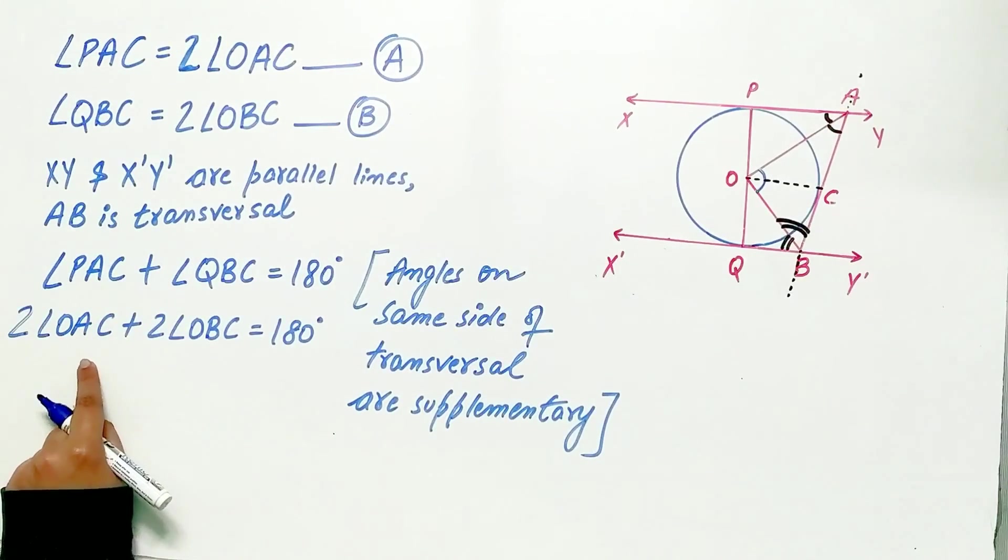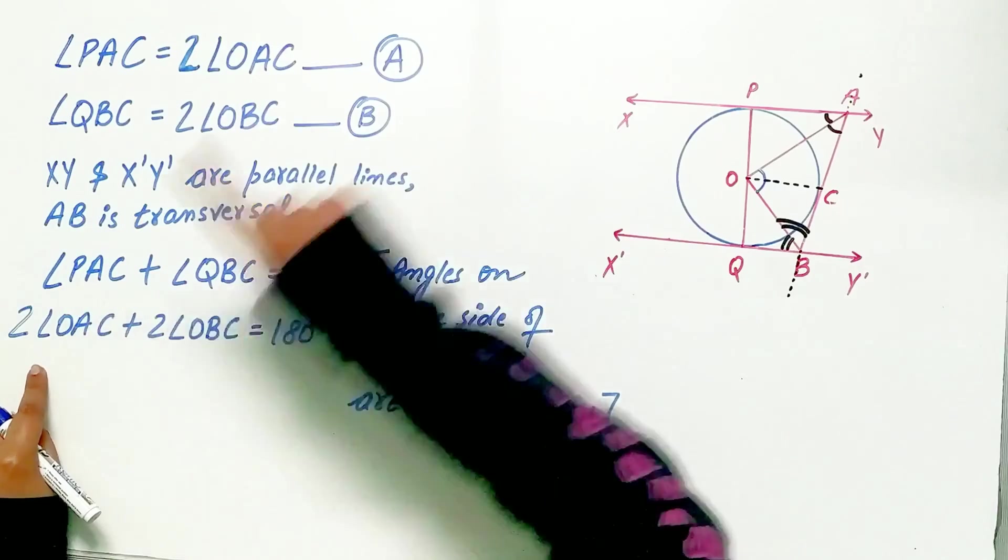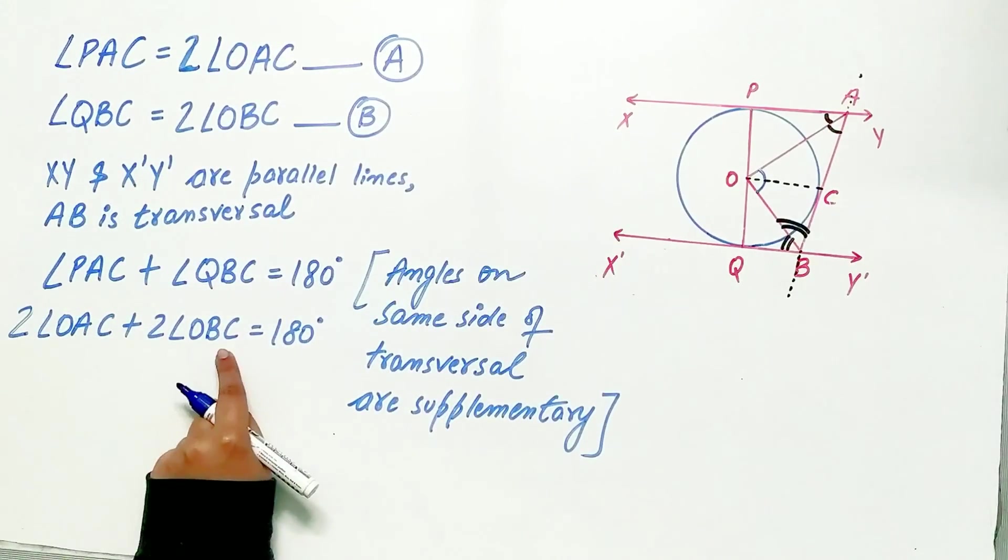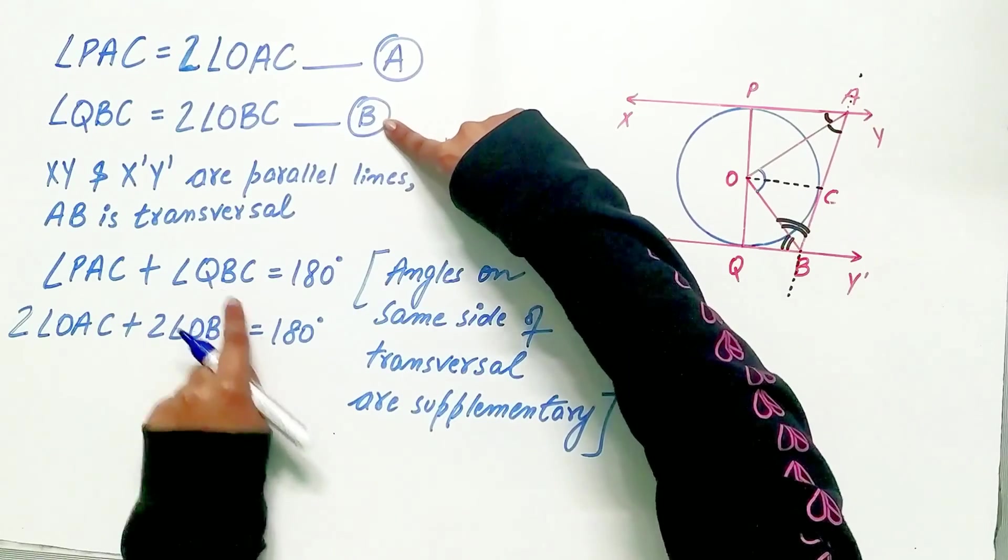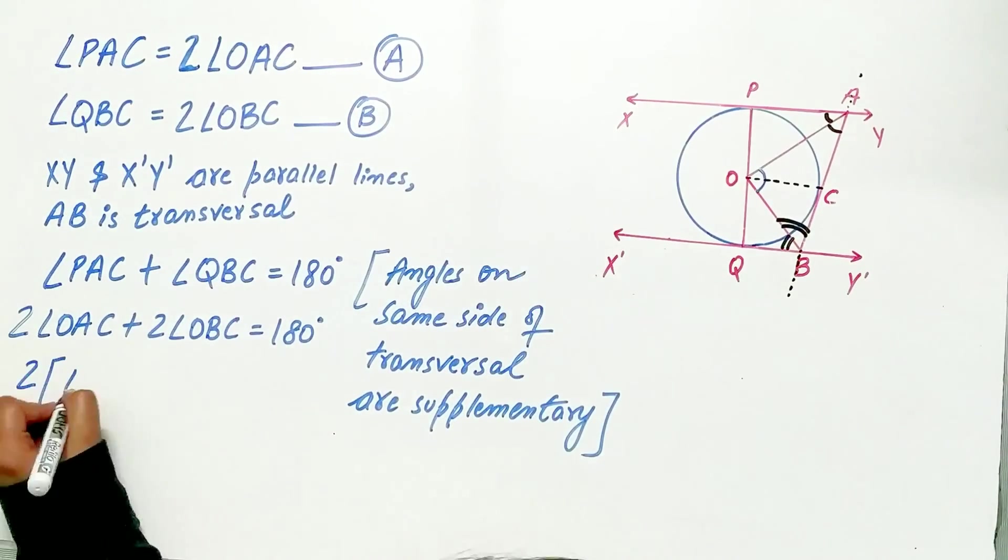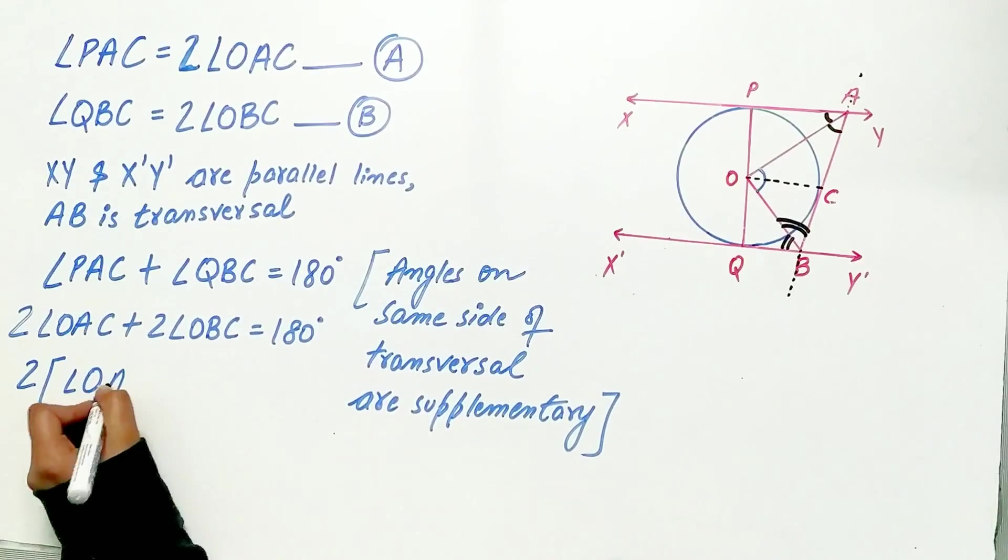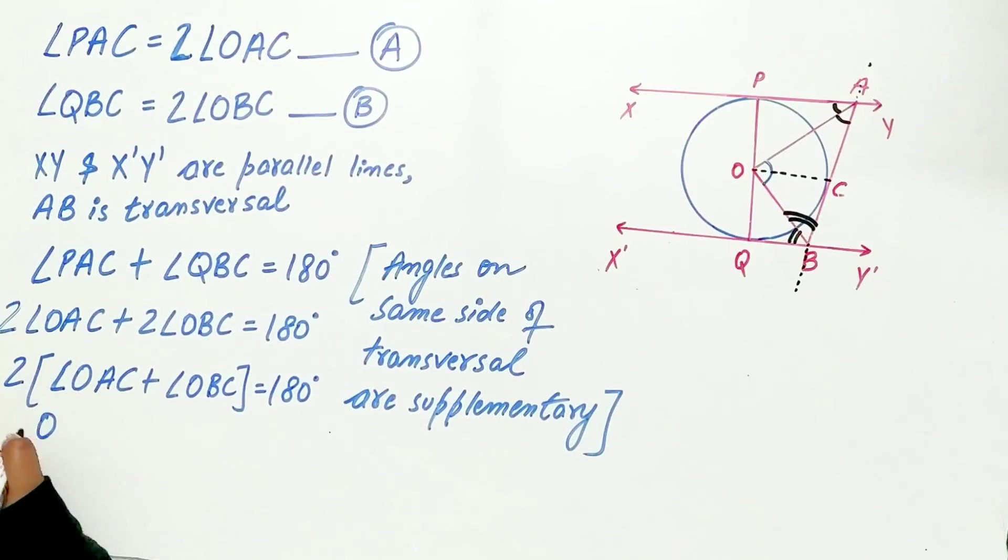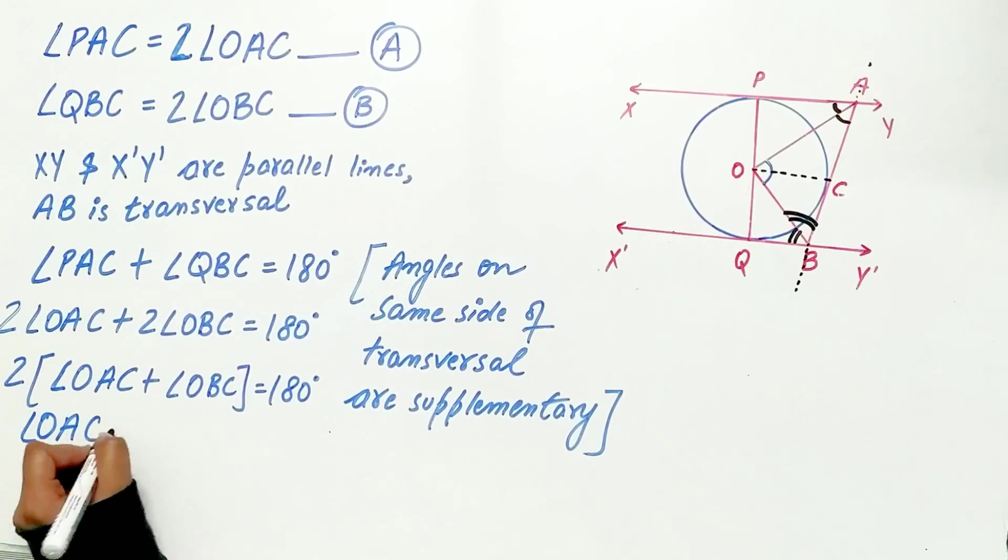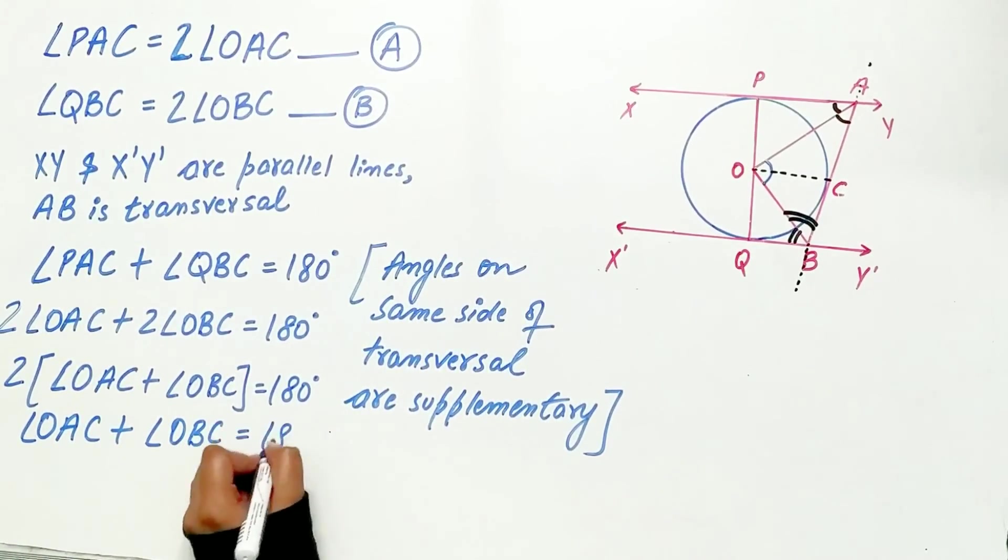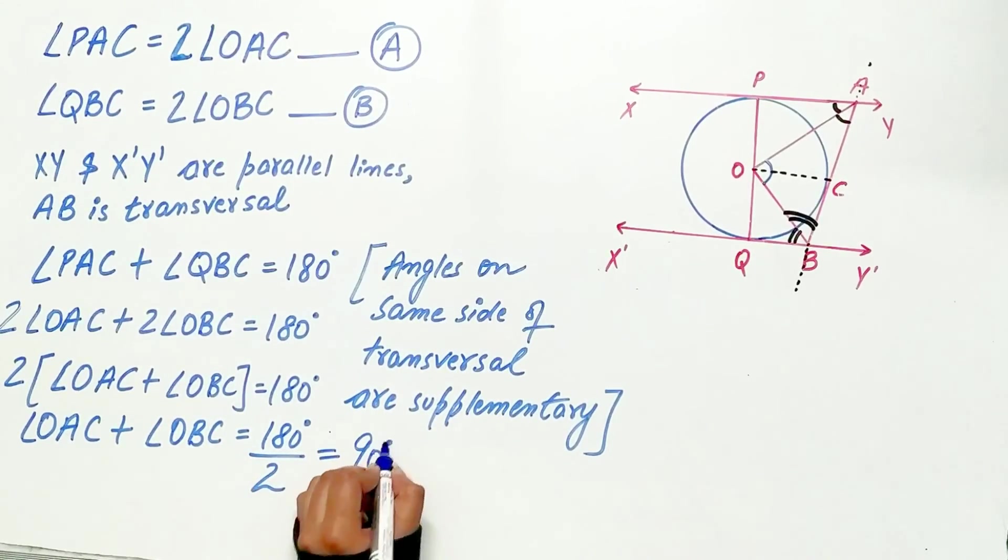Now from A and B, substitute twice of angle OAC in place of PAC from A. Similarly, substitute twice of angle OBC in place of QBC from B. Now, two is common in both the terms. Take it out. Hence, angle OAC plus angle OBC is equal to 180 degrees divided by 2, that is equal to 90 degrees.